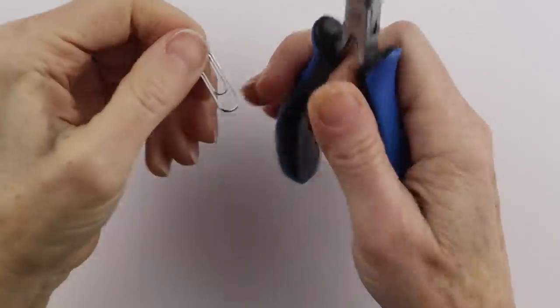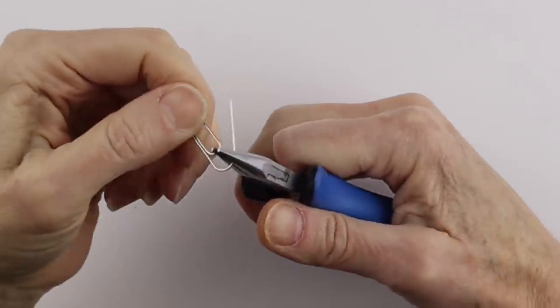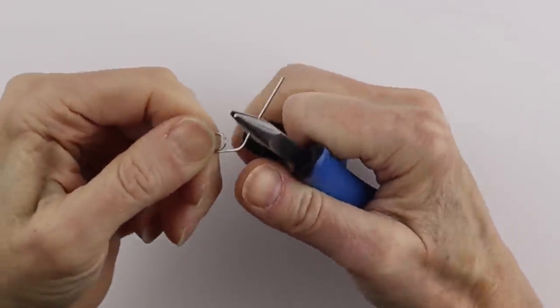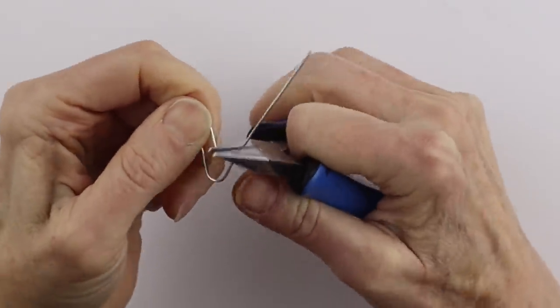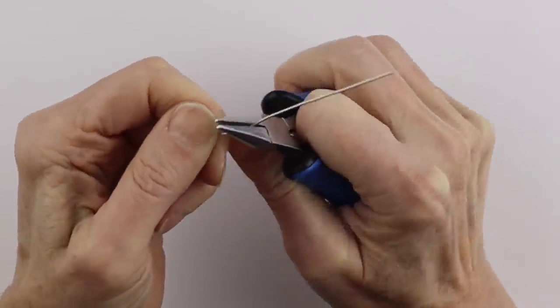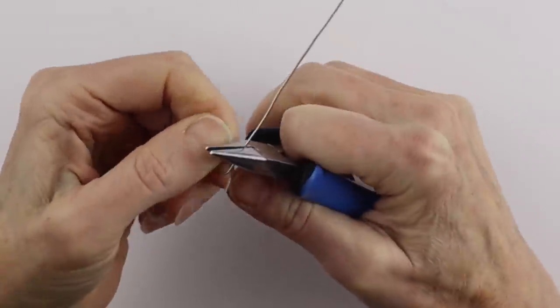We're going to take the paper clip and open it up. I have other videos making rings with paper clips, some of them made without using tools. I am going to use tools for this project.